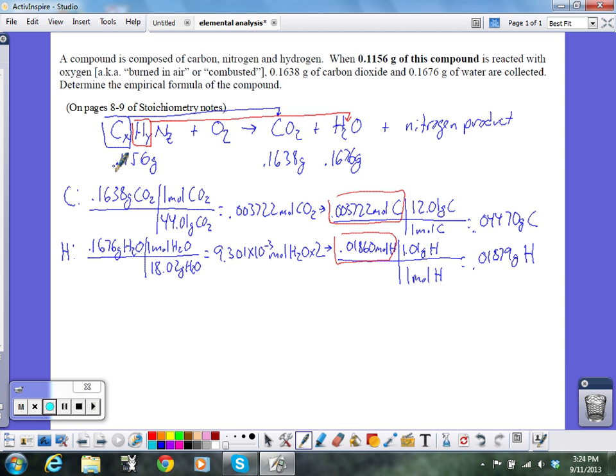The total mass of the sample was 0.1156. So I know that out of that total, 0.04470 grams of carbon and 0.01879 grams are hydrogen, which means the rest of this must be my nitrogen. So if I start with 0.1156 grams of sample and subtract out the carbon and subtract out the hydrogen, what I have left is the nitrogen. And that works out to 0.0512 grams of nitrogen. So that plus that plus that equals 0.1156, the law of conservation of mass.